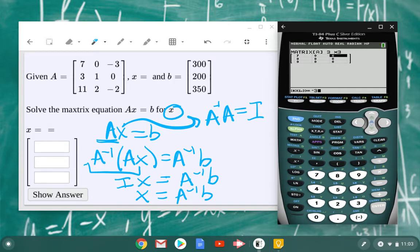So then 7, 0, negative 3, then 3, 1, 0, 11, 2, and negative 2. And I'm just going to check and make sure that I've got this correct. 7, 0, negative 3, 3, 1, 0, 11, 2, negative 2. Great.